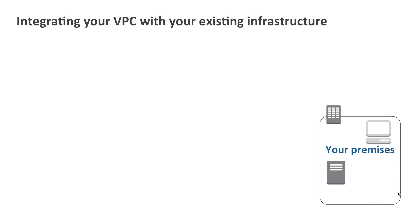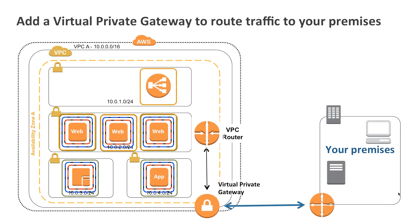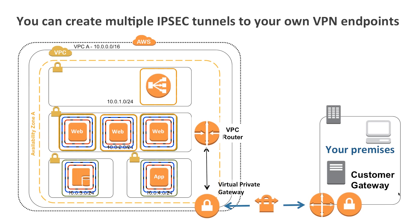Let's now look at how you can integrate your virtual private cloud with your existing infrastructure, whether that's on-premises or an existing outsourcing data centre that you may operate. You can add a virtual private gateway to your VPC, which gives you the ability to route traffic back to your premises. You can then create multiple IPsec VPN tunnels from your VPC back to your own VPN endpoints that you maintain.